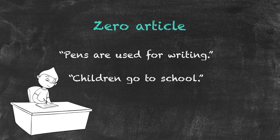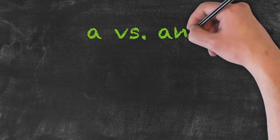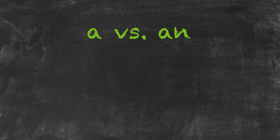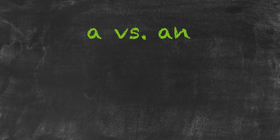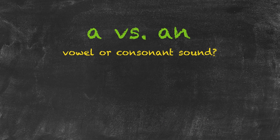When looking at our articles, we have to remember that they always precede nouns. When looking at 'a' versus 'an', many people consider this to be a differentiation between spellings — whether the noun starts with a vowel or a consonant. More accurately, this should be described by how the noun sounds: does it start with a vowel or a consonant sound?